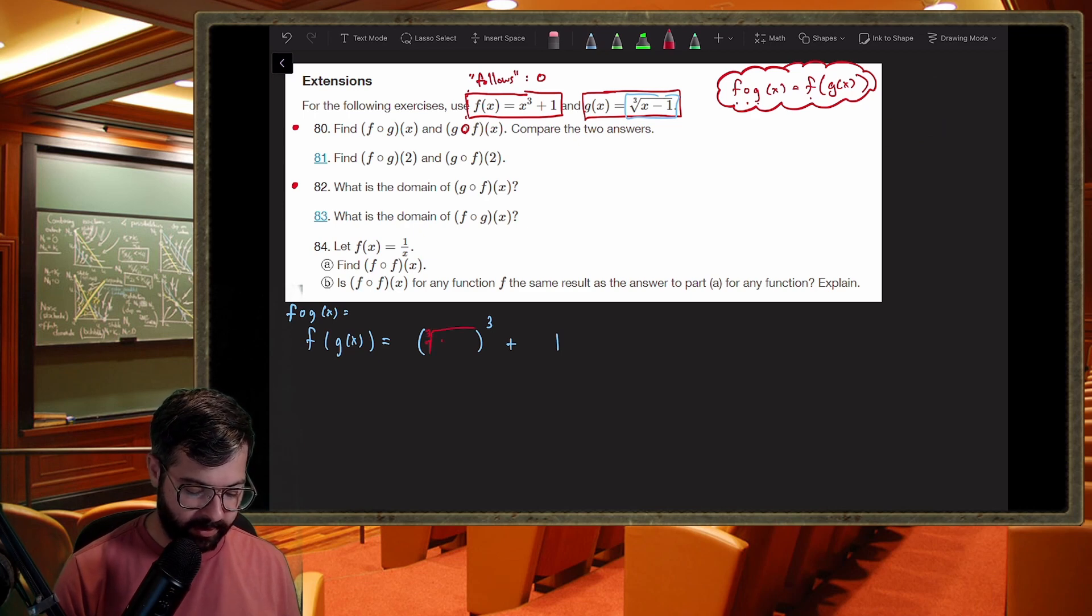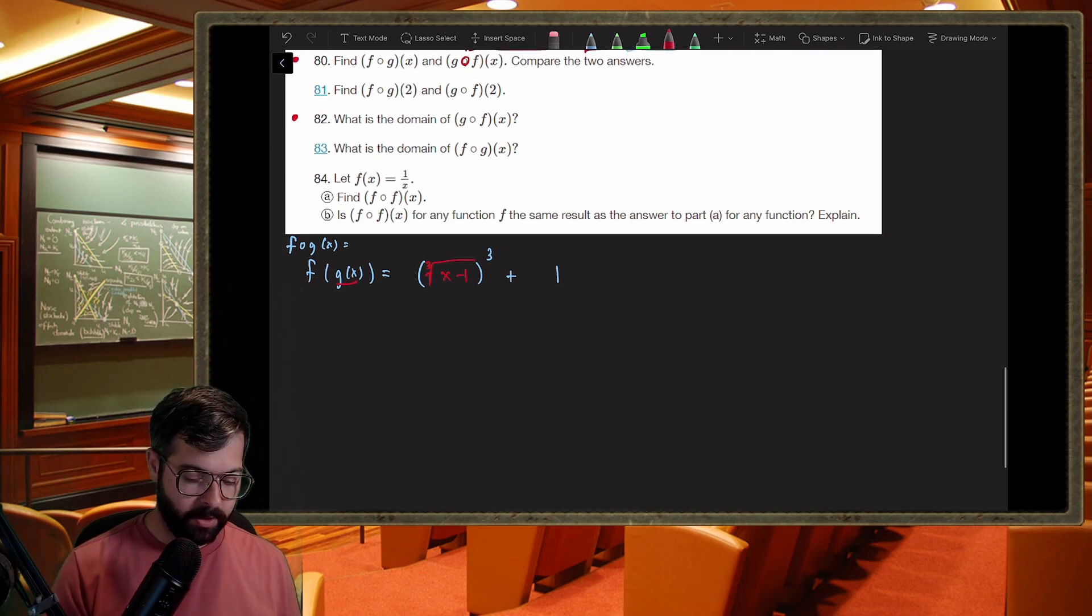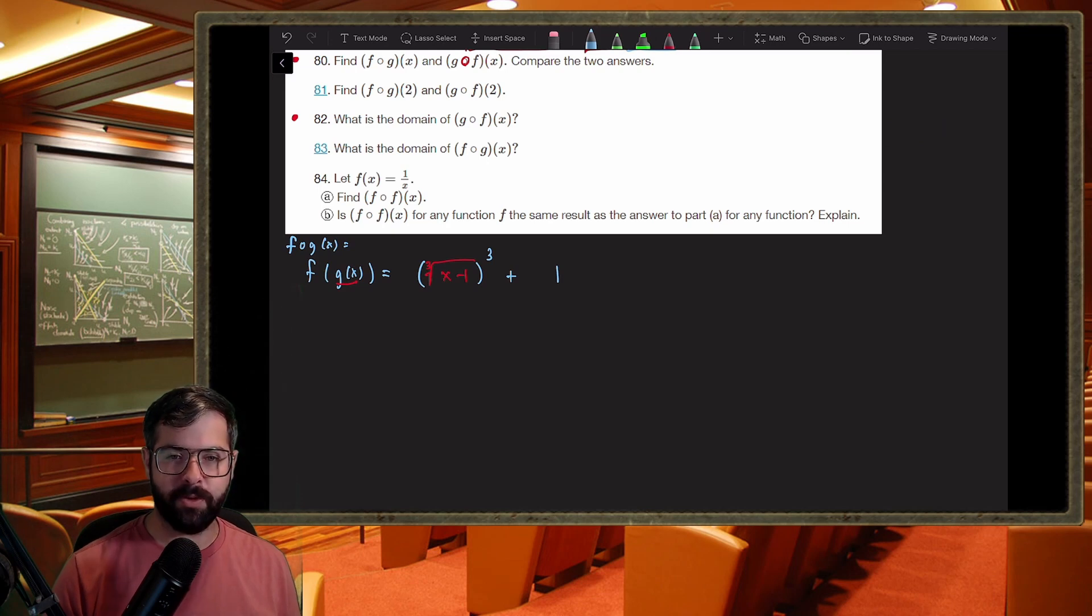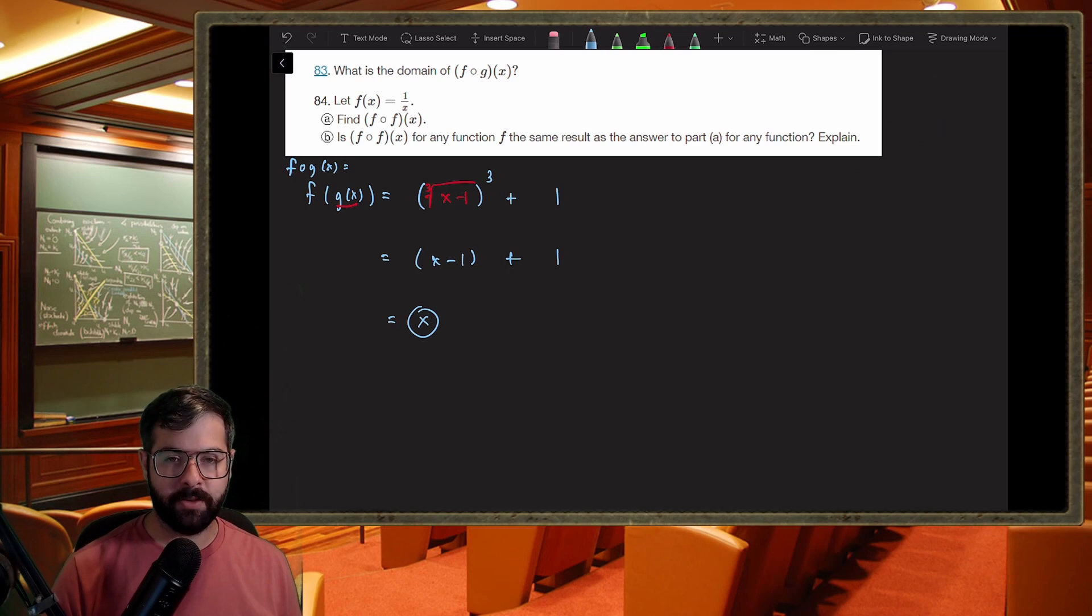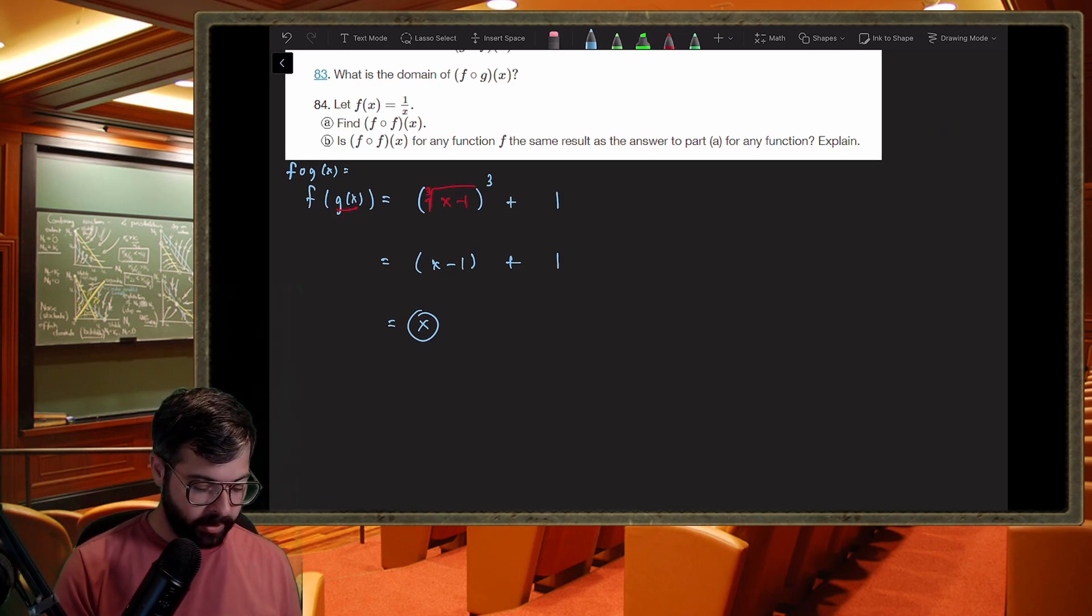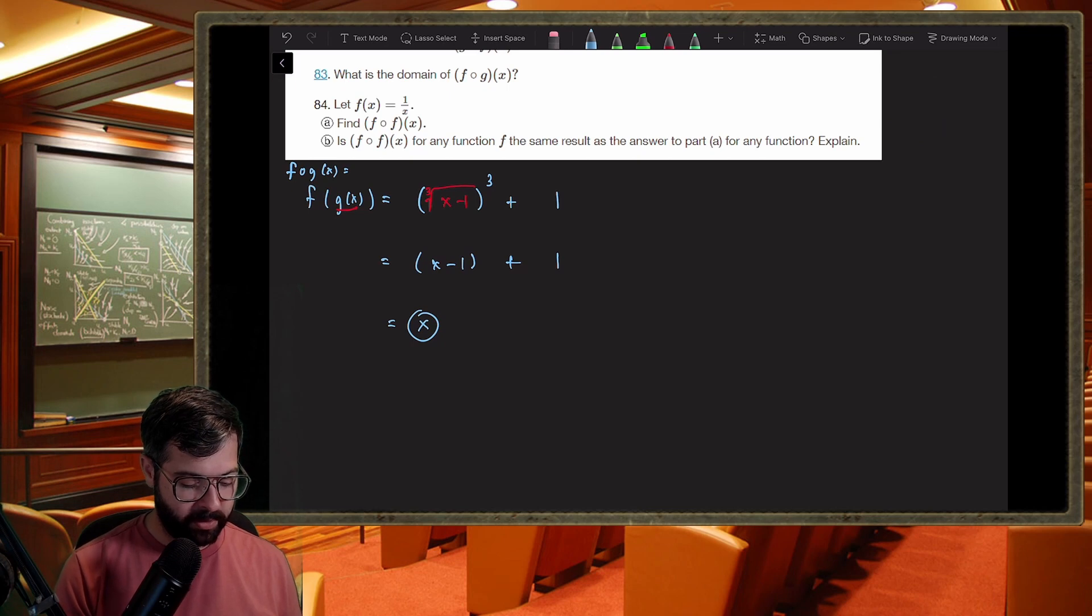So that's the cube root of x minus one cubed plus one. We're adding the output of g of x. From here now we just do the algebra. When we cube a cube root, these are inverse operations, and so what we'll just get is the interior piece, x minus one plus one. We combine like terms and we're just left with x. So this simplified down a great deal.